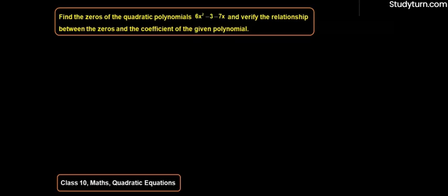Hello students, today we will be solving a problem of Class 10 Mathematics, Chapter Quadratic Equations. The question says: find the zeros of the quadratic polynomial 6x² - 3 - 7x and verify the relationship between the zeros and the coefficients. So the given polynomial p(x) is denoted as 6x² minus 7x minus 3.